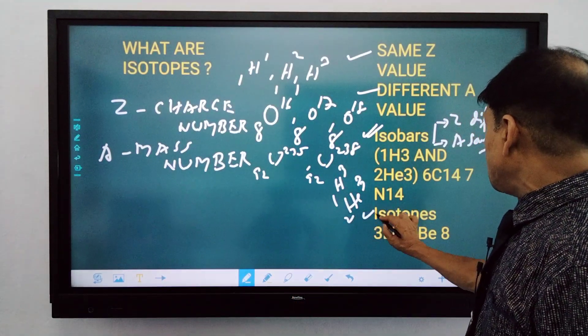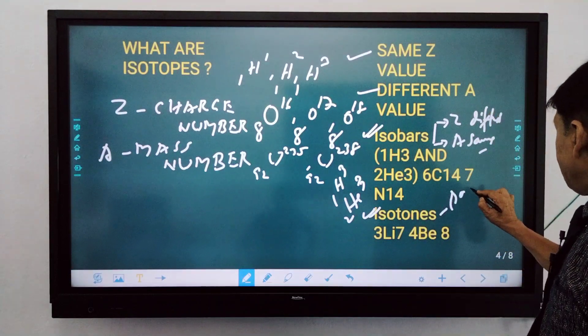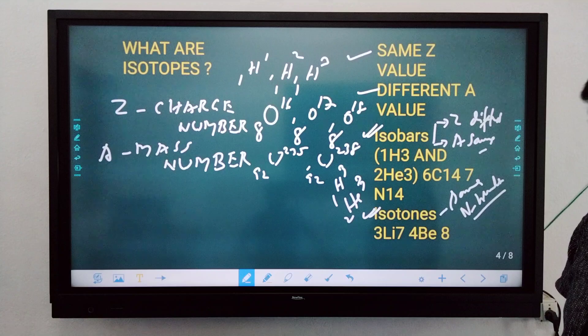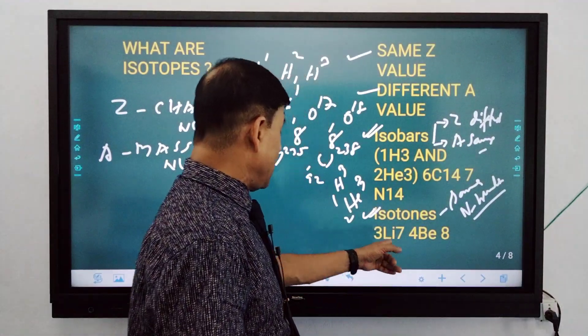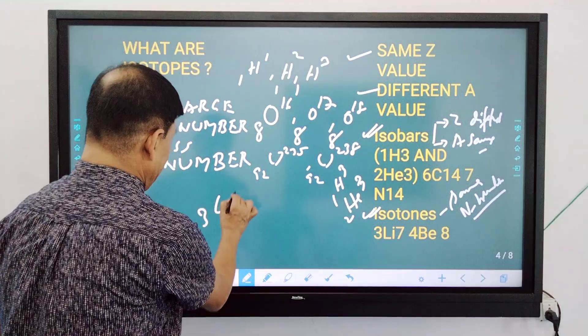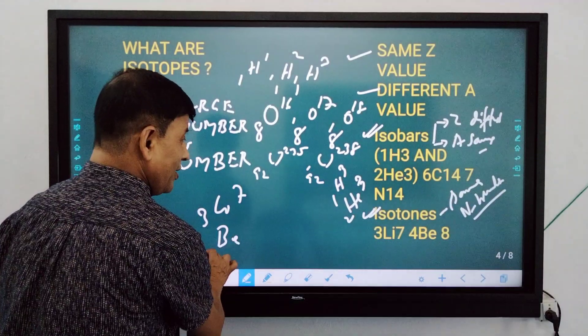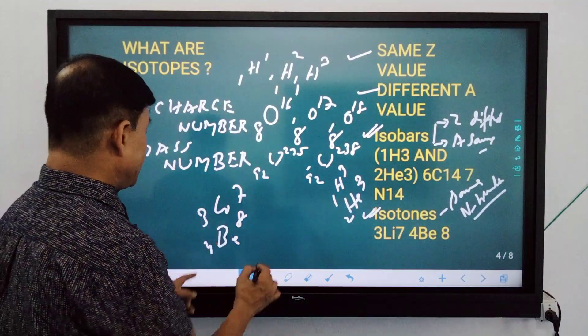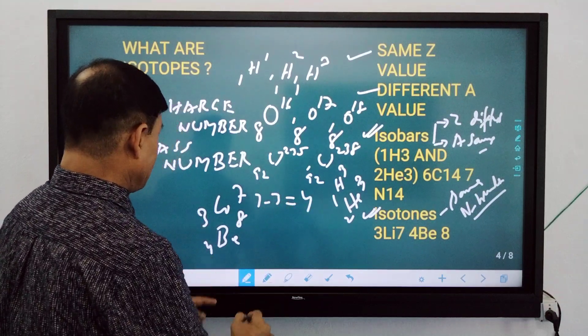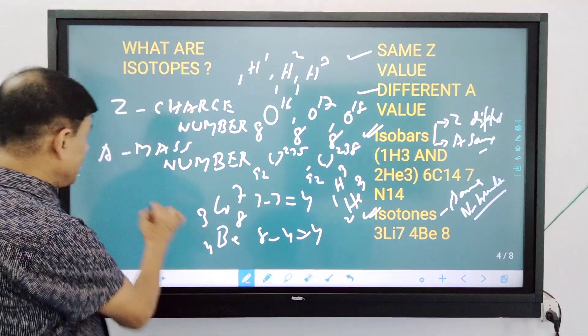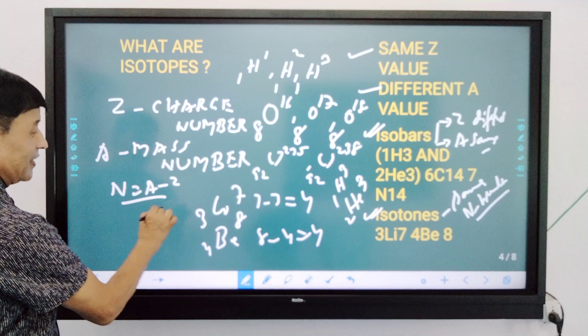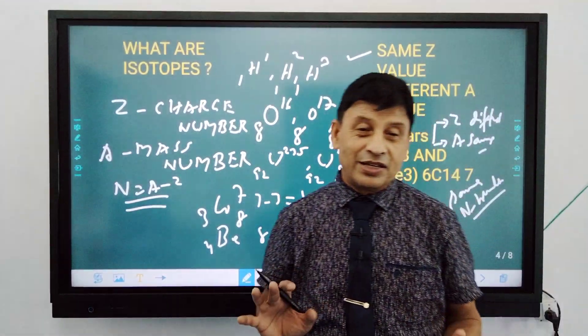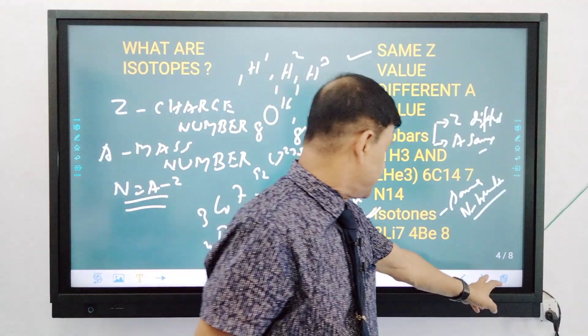Next is isotones. Isotones is the same neutron number. What is the neutron number? N equals A minus Z. If neutron number is same, this is isotones. For example, if we have N3- (7 minus 3 equals 4) and O4- (8 minus 4 equals 4), neutron number is same in both cases, which is 4.